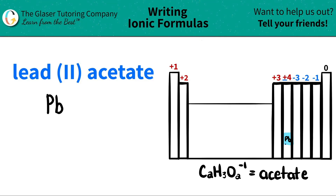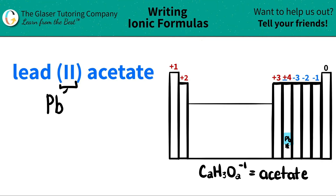Star lead out, because lead can be a plus two or a plus four. Lead is a post-transitional metal, and transition metals have many different charges. In this case, we have the Roman numeral to tell us what charge lead is going to be. The Roman numeral is the charge of the metal. So in this case it's going to be a plus two charge because the Roman numeral is two. It does not follow the trend on the periodic table, so Roman numerals take precedence over trends.